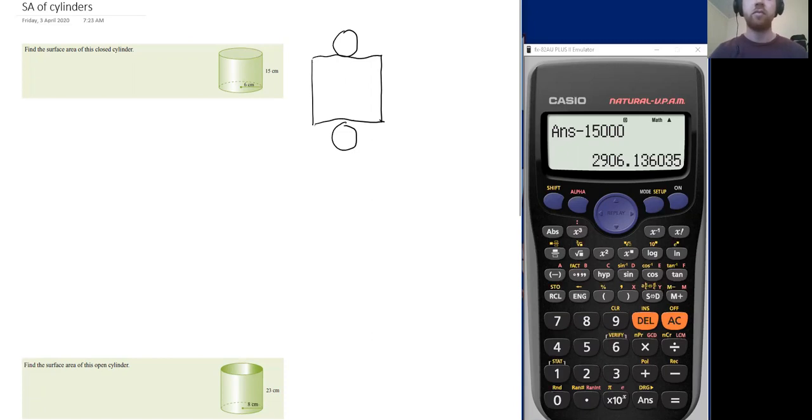So you get this kind of interesting effect where the length of this part of the rectangle equals the circumference of the circle. So remember, the circumference of a circle, which you did a few weeks back, has the formula 2πr. So that's the circumference as like the perimeter around a circle.